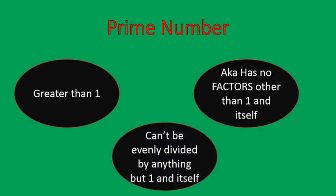So first off, let's talk about prime numbers. Prime numbers are, first off, greater than one. Secondly, they can't be evenly divided by anything except one and itself, or in other words, it has no factors other than one and itself. That's the definition of what a prime number is: it's greater than one, and it has no factors other than one and itself.